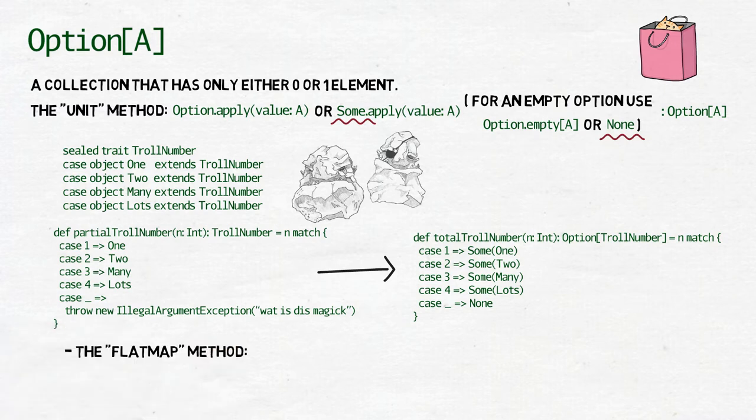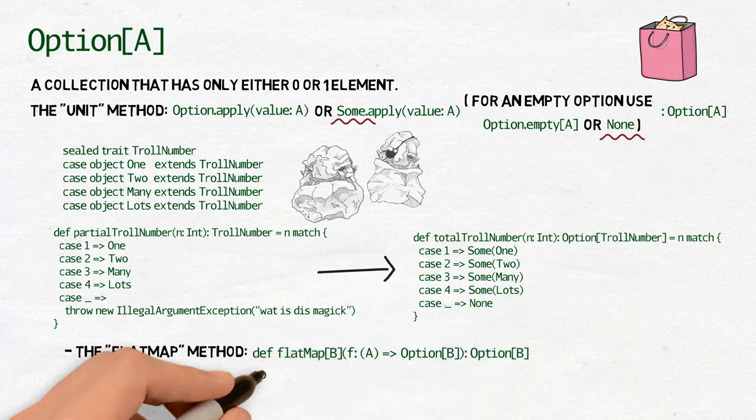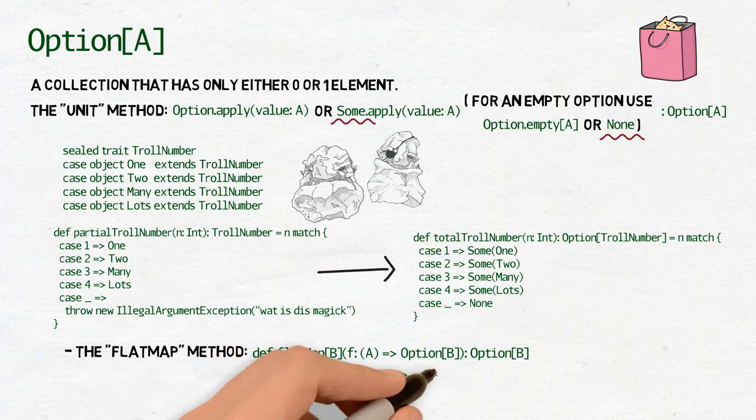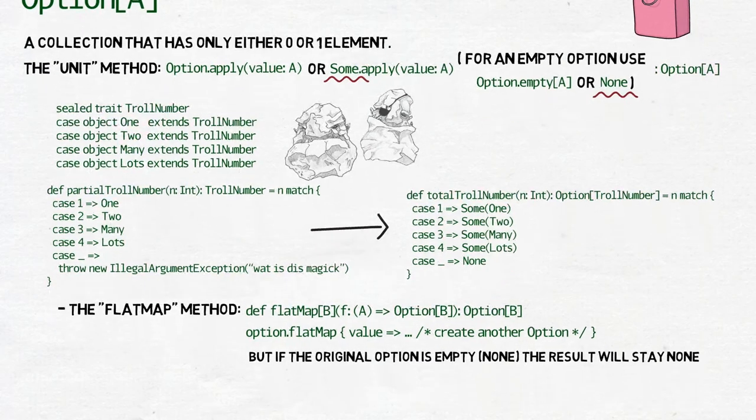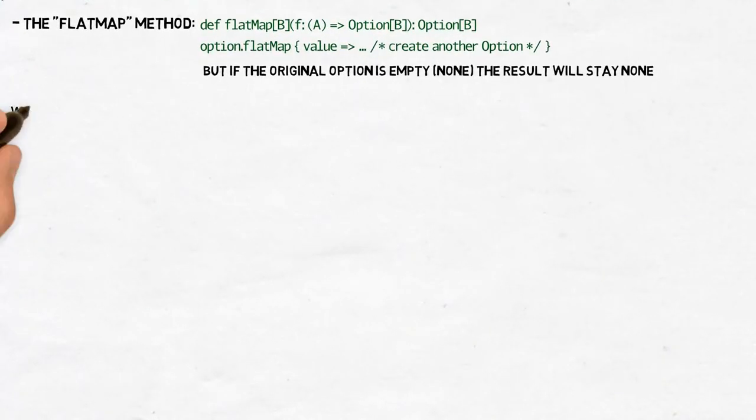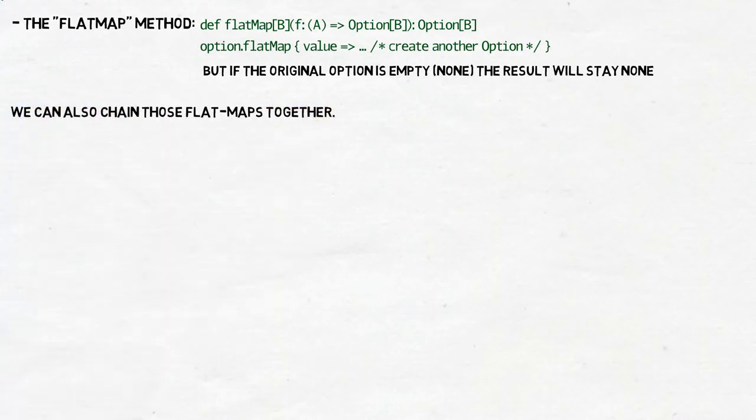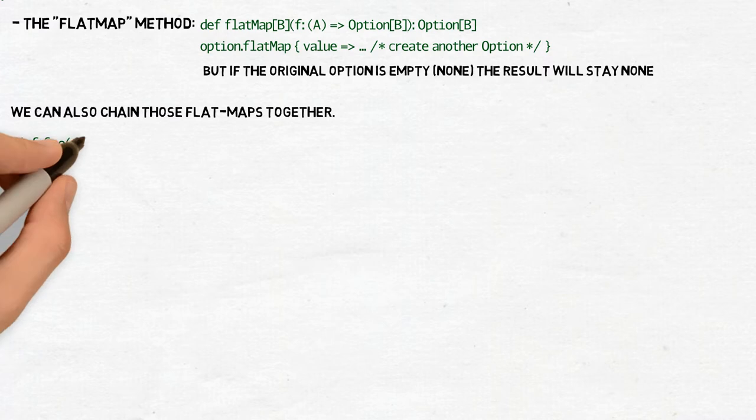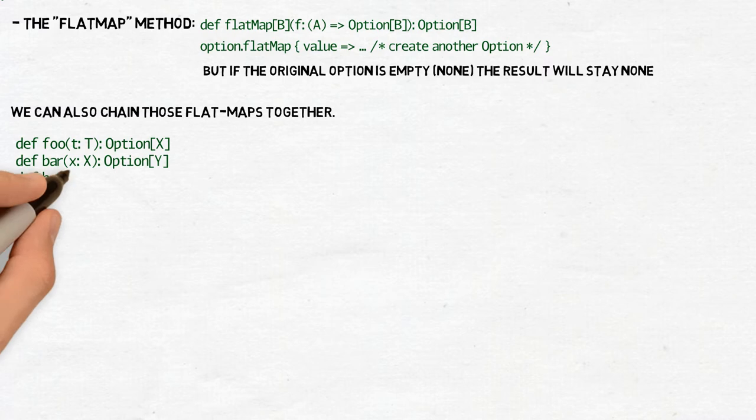Then there is the flat map method of the class option of A, which looks like that. You provide it with a function f, which will take the element of the option and create a new option of type B based on that element. But that will work only if the option actually has an element. If option of A is empty, option of B will be empty as well. We can also chain those flat maps together. The result of the first called function will be passed to the second one as an argument if the result is some, then the result of the second one will be passed to the third one if it is some and so on.